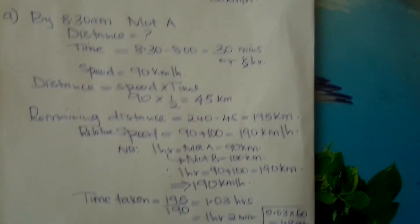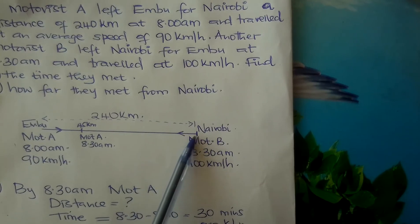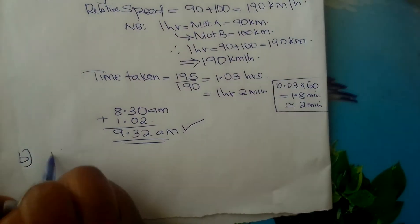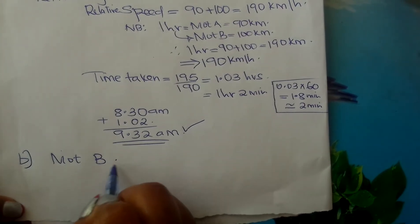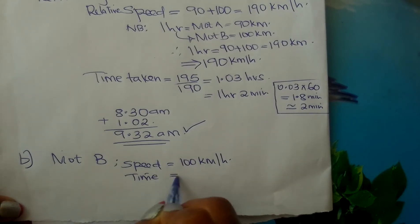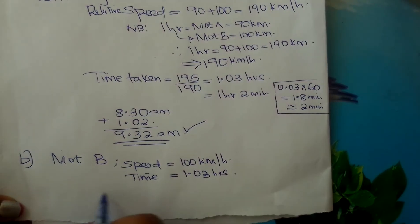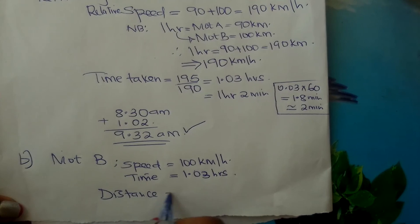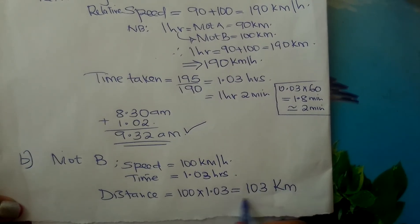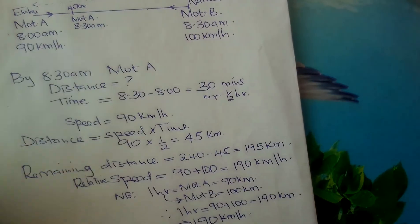For part B, find how far they met from Nairobi. Consider motorist B: his speed is 100 km per hour and he travelled for 1.03 hours. Distance equals speed times time: 100 multiplied by 1.03 gives 103 kilometres from Nairobi. So motorist B will have travelled about 103 kilometres from Nairobi when they meet.